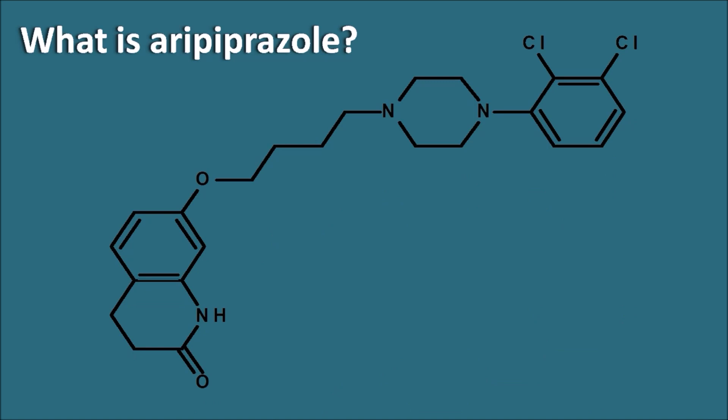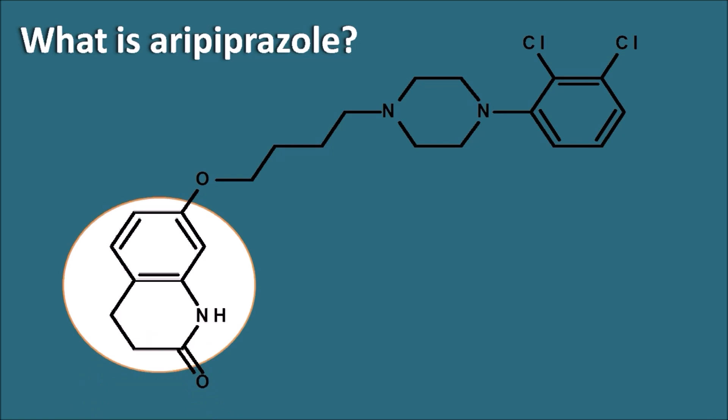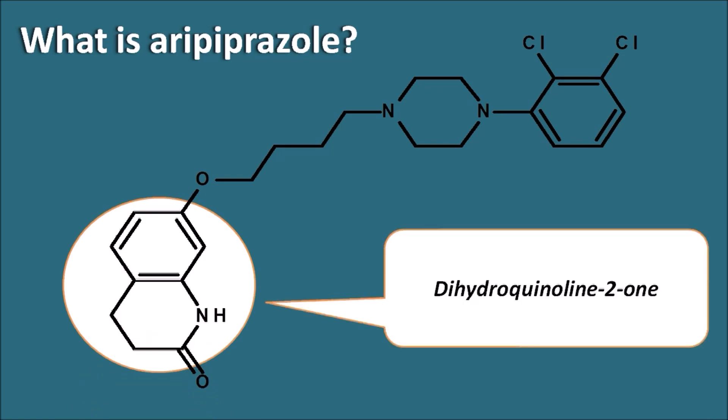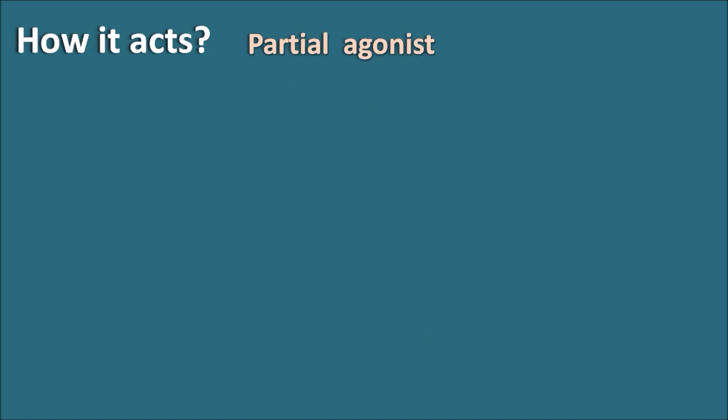Looking at the structure of aripiprazole, it is a very large structure with different chains. Among these, we can observe dihydroquinolinone as one of the ring systems present in aripiprazole. It also contains another heterocyclic ring like piperazine, but dihydroquinolinone is one of the important ring systems present in aripiprazole.